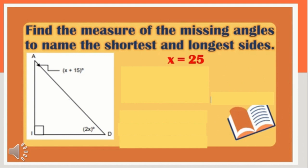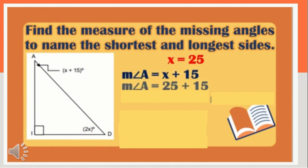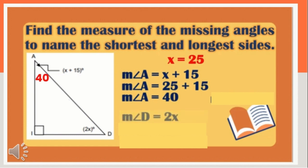Combining like terms: x plus 2x is 3x, and 15 plus 90 is 105. So we have 3x plus 105 equals 180. Using the addition property of equality: 3x equals 180 minus 105, so 3x equals 75. Dividing both sides by 3: x equals 25. The measure of angle A is x plus 15. Substituting x equals 25: angle A is 25 plus 15, so angle A measures 40 degrees. The measure of angle B is 2x; substituting: 2 times 25, so angle B measures 50 degrees. The measure of angle I is 90 degrees.